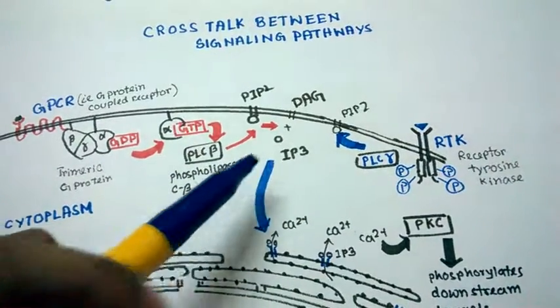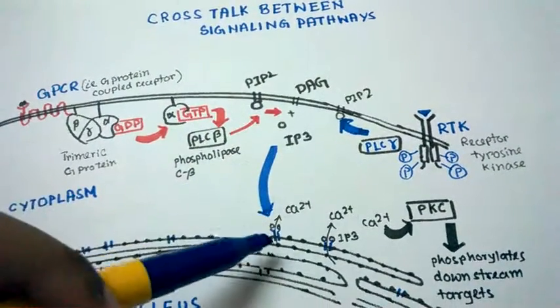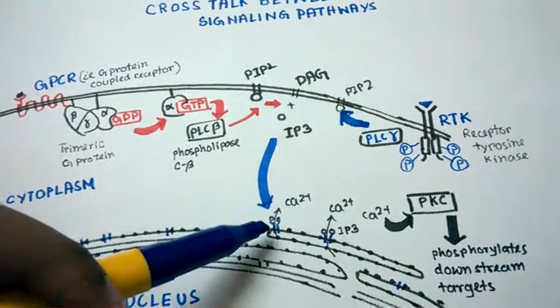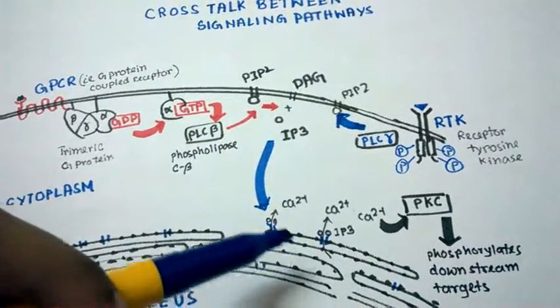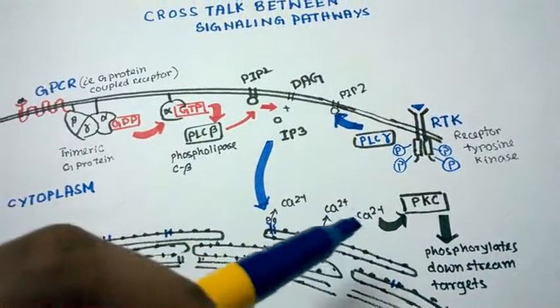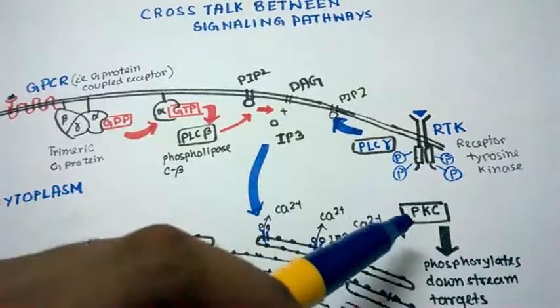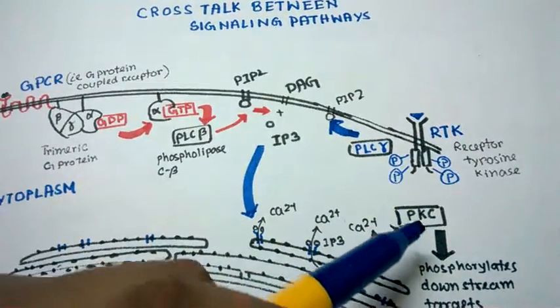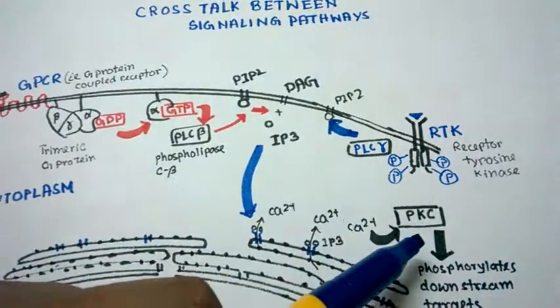IP3 binds to calcium channels on the endoplasmic reticulum and releases calcium ions into the cytoplasm. This calcium ion activates protein kinase C, and protein kinase C, being a kinase, phosphorylates many downstream signaling molecules.